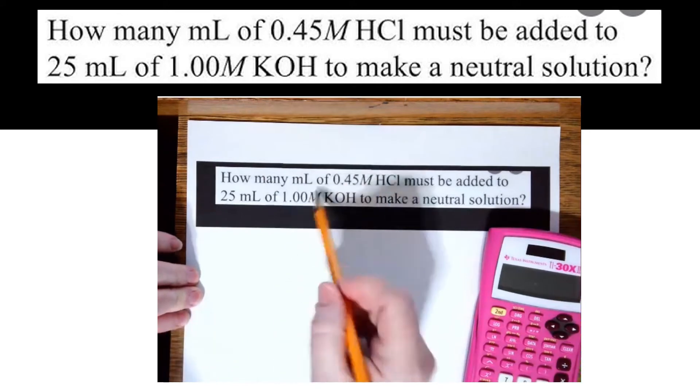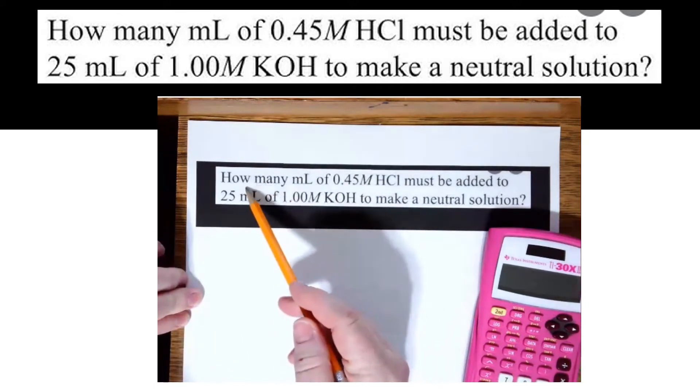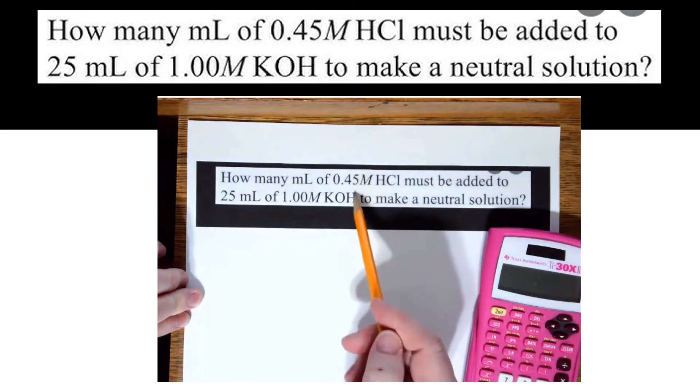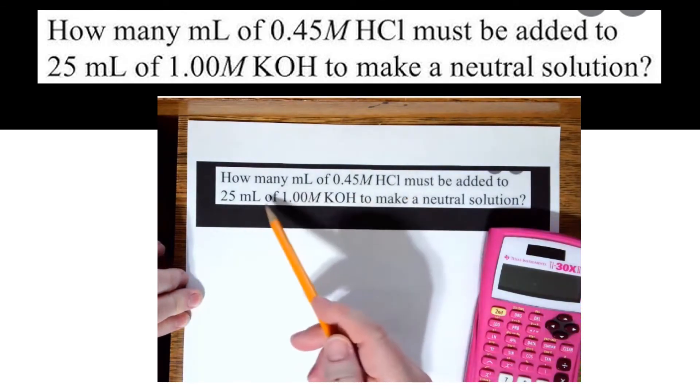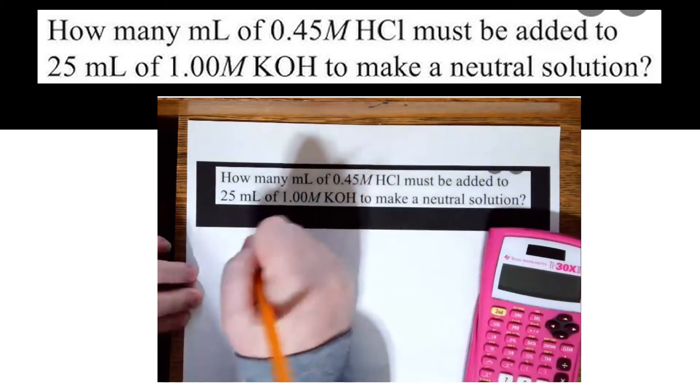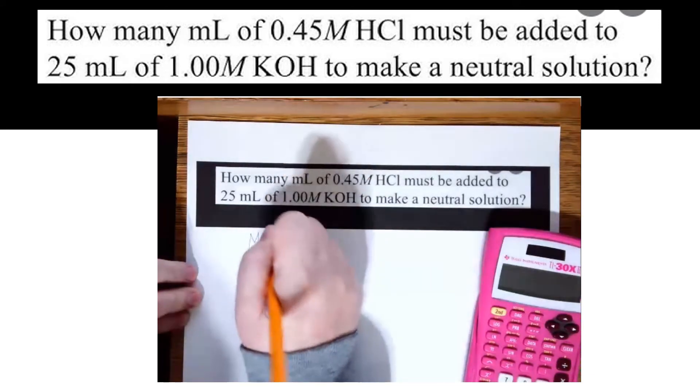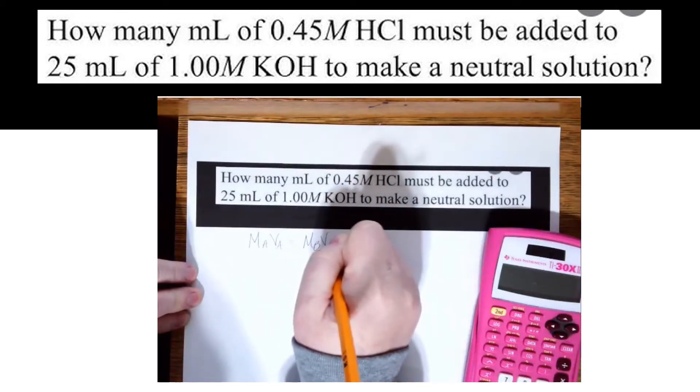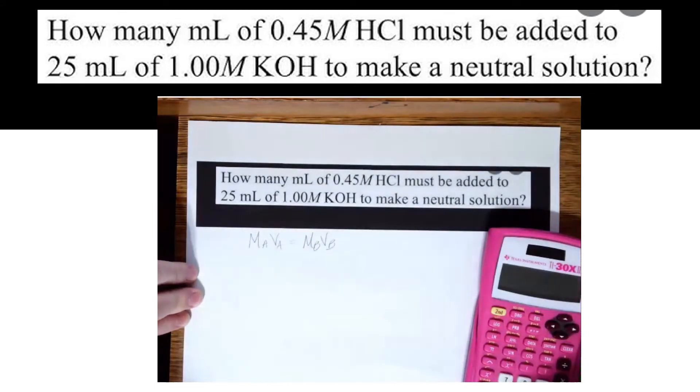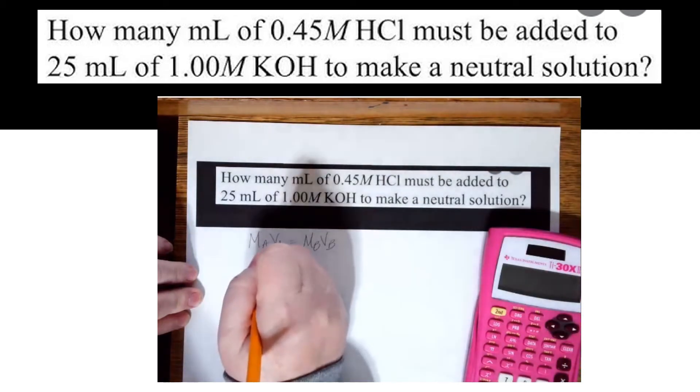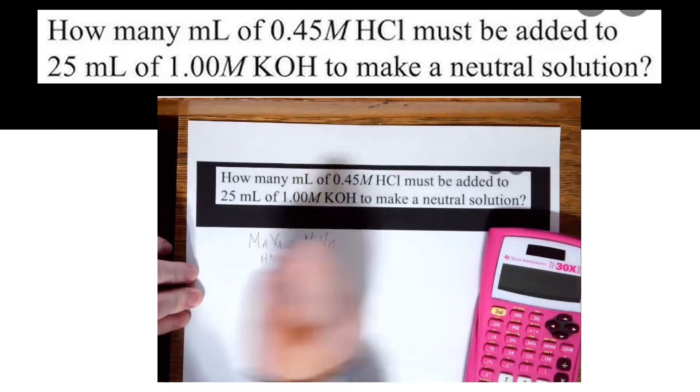On the acid side, I need the number of H's. I'm going to multiply it times the number of OH-. We are going to solve this equation. How many milliliters of this molarity acid must be added to this number of milliliters of this molarity base to make a neutral solution?